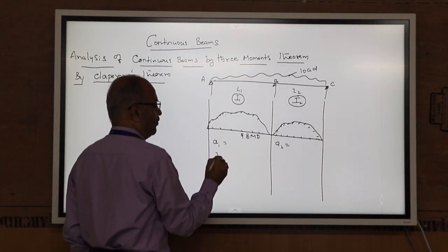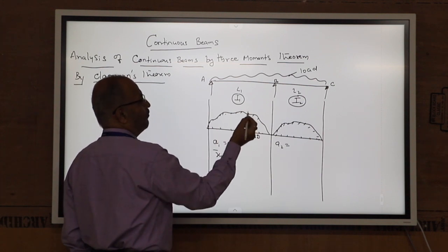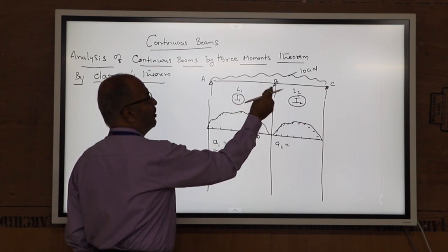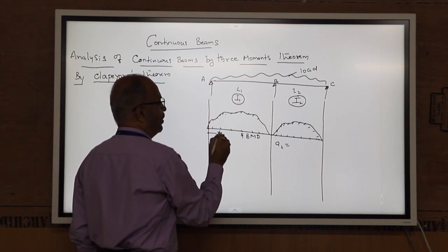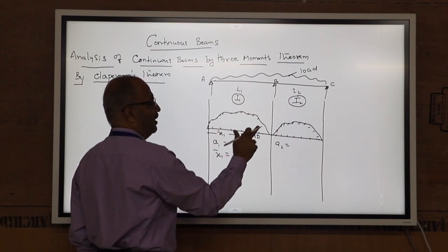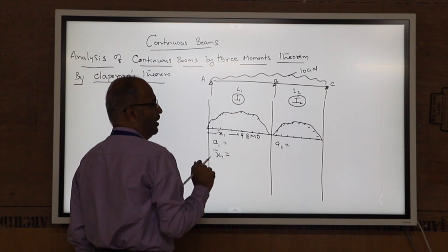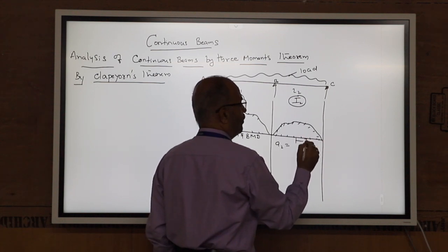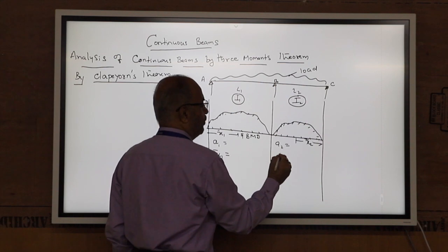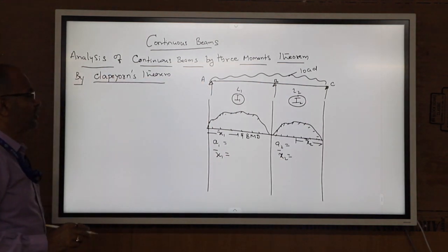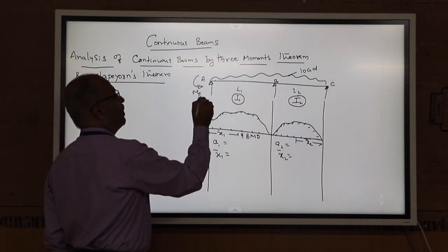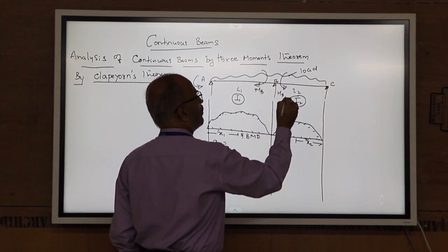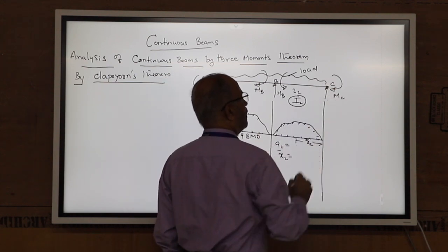Also, the centroid of the free BMD is taken from the far end. Remember, we always take the mid-support as the reference. With respect to mid-support B, the far end is A. Therefore we take X1 bar as the centroid distance of the BMD of span AB from A. Similarly, with respect to B, the far end is C. We call this X2 bar — the centroid of the free BMD of span BC from C. And MA, MB, and MC are the moments at the supports.